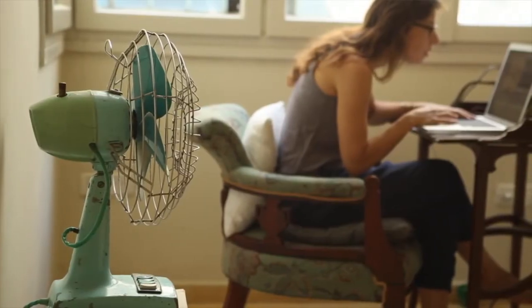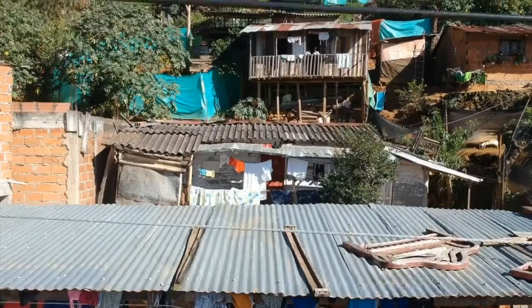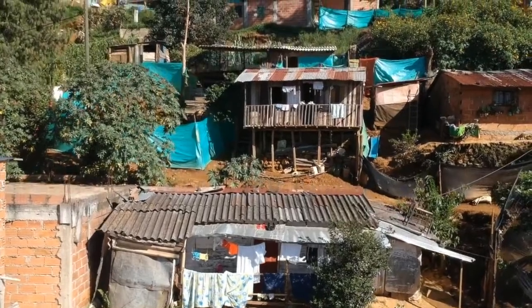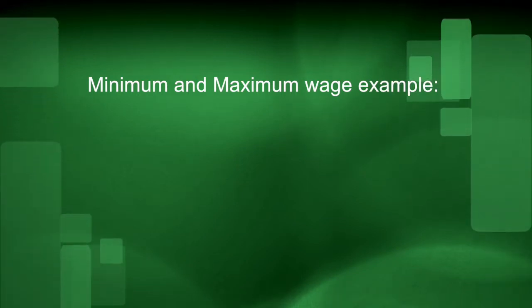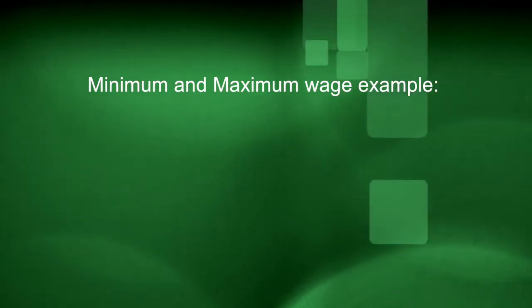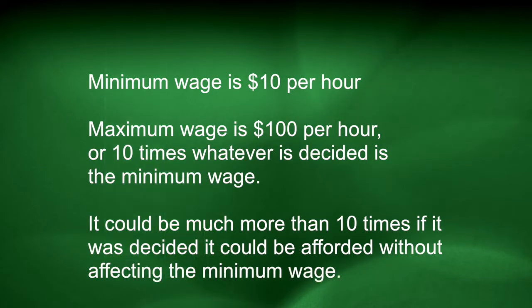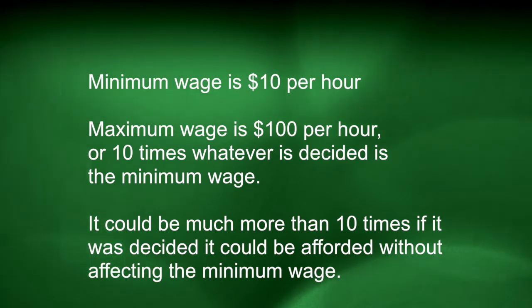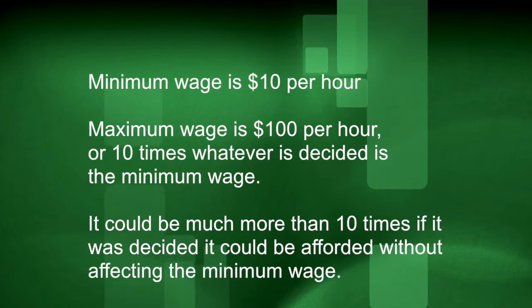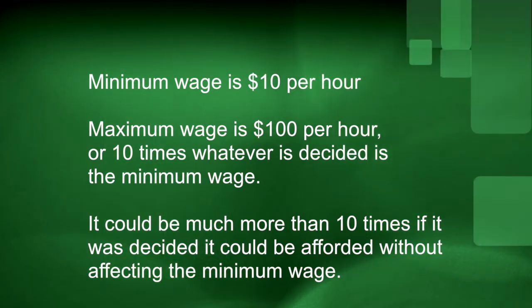Similarly, in first world countries now, computers are a necessity, whereas in other less developed places, computers are still considered a luxury or semi-essential. The relationship between the minimum and maximum wage may be set at a given rate. For example, if the minimum wage is $10 an hour, it may be appropriate to say that the maximum wage would not exceed $100 an hour, or ten times that amount. This will help eliminate extremes in poverty and wealth. There are already examples of this tiered wage system in the world today.